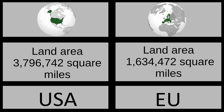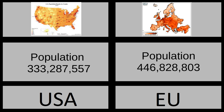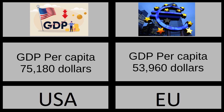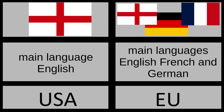Land area: 4 million square miles versus 1,500,000 square miles. Population: 350 million versus 450 million. GDP total: $25,000,000,000 versus $24,000,000,000. GDP per capita: $75,000,000 versus $50,000,000. Main language: English versus English, French, and German.